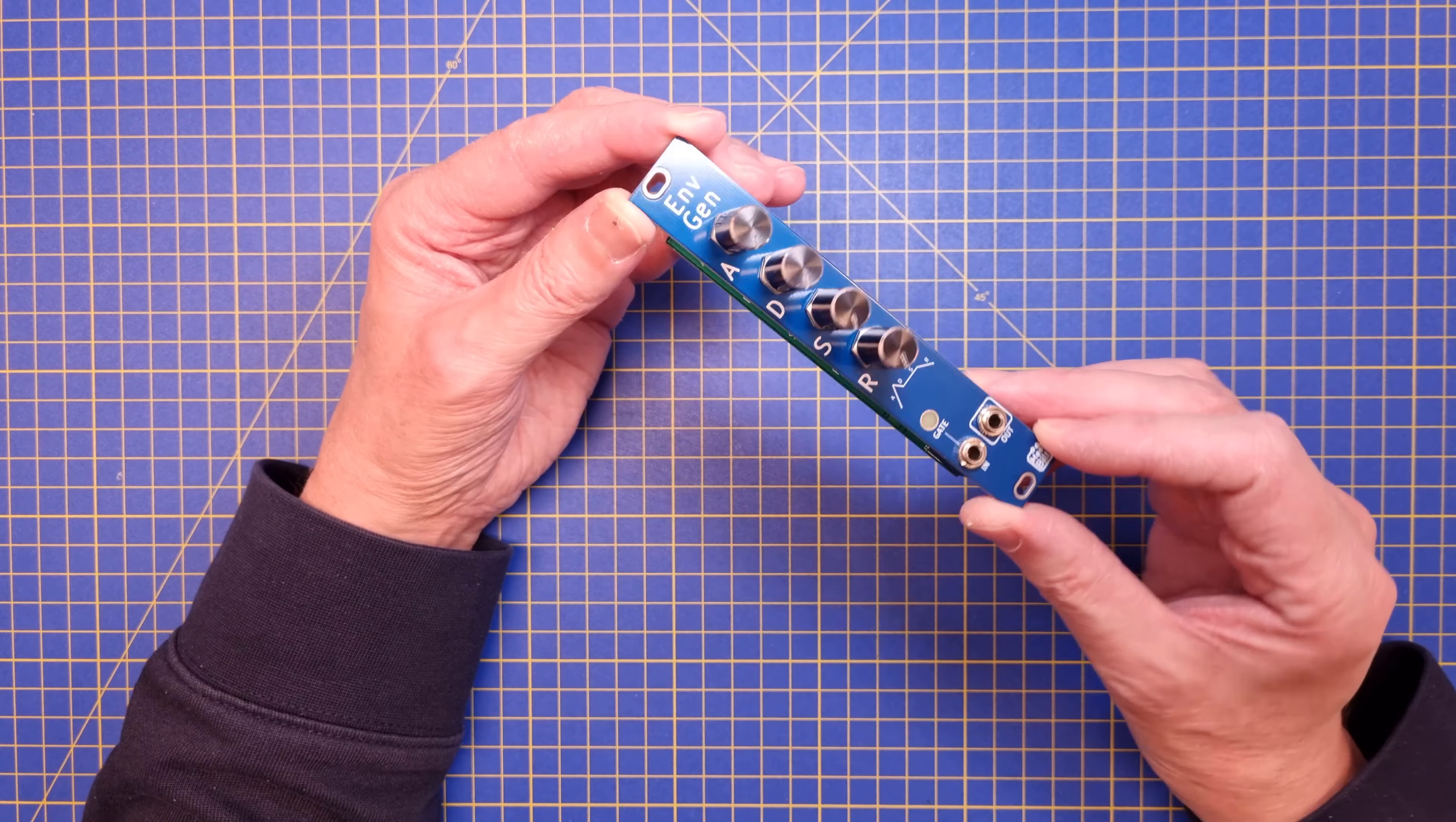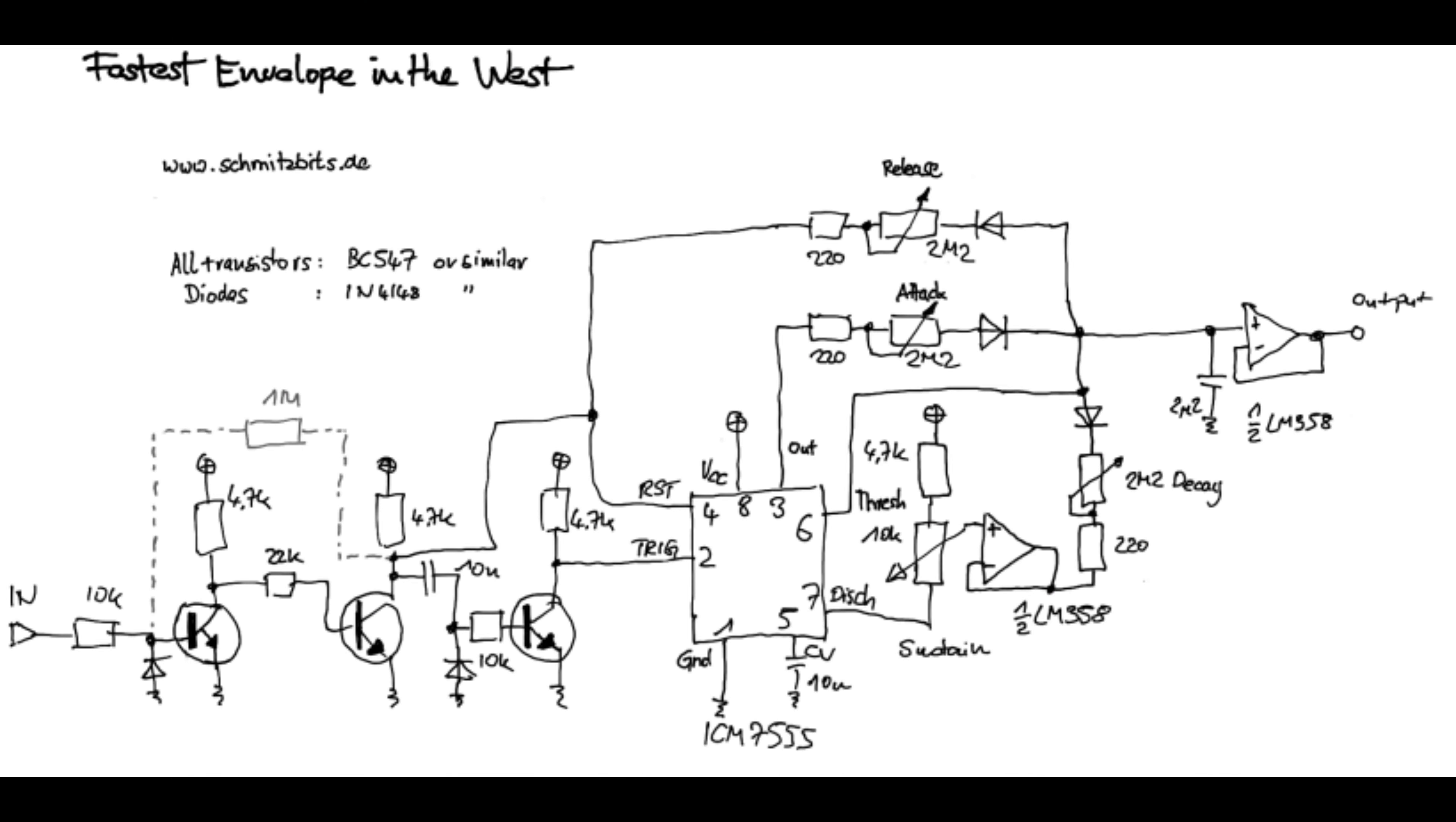It's based on René Schmitz's design, fastest envelope generator in the West. I think that is a really cool design because it basically uses every feature of the 555 timer to build up an ADSR envelope generator.